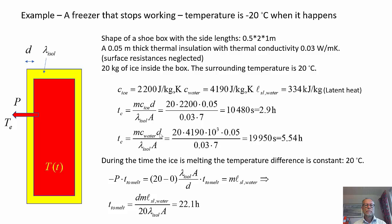Let's look at an example. Let's say we have a freezer that stops working. It starts, we have a temperature of minus 20 degrees when it happens. The freezer has a shape of a shoebox, half a meter times two times one meter. We have five centimeters of insulation with the thermal conductivity 0.03. We have 20 kilograms of ice inside the box and the surrounding temperature of 20 degrees.